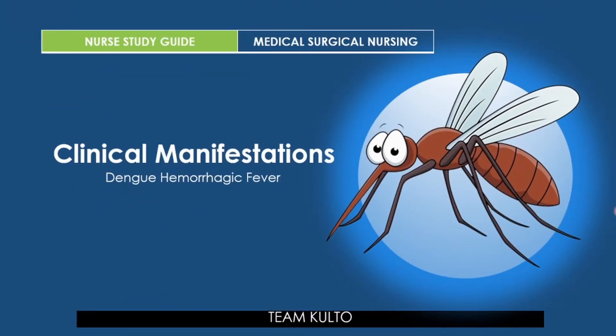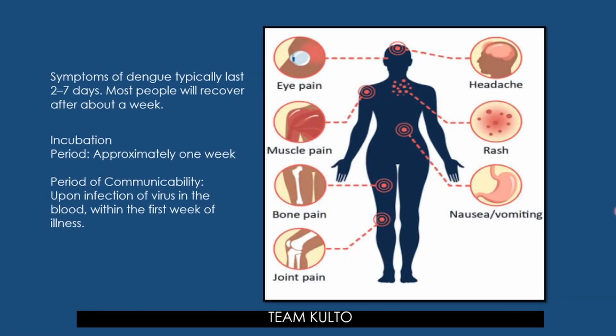Clinical manifestations begin four to six days after infection and may last up to ten days. Mild symptoms of dengue can be confused with other febrile illnesses. The most common symptom is fever with any of the following: nausea, vomiting, rash, aches and pains, eye pain (typically behind the eyes), and muscle, joint, or bone pain. Symptoms typically last two to seven days.